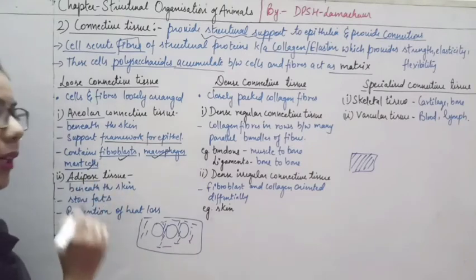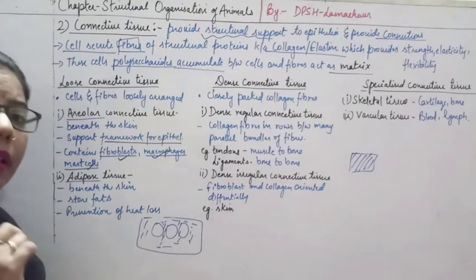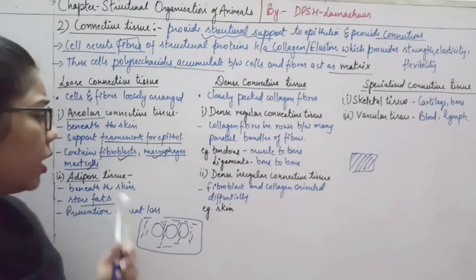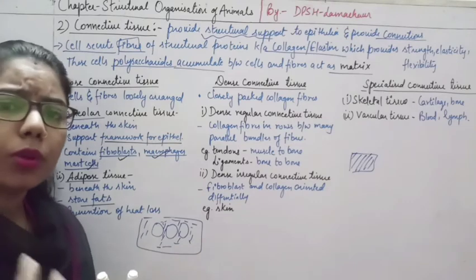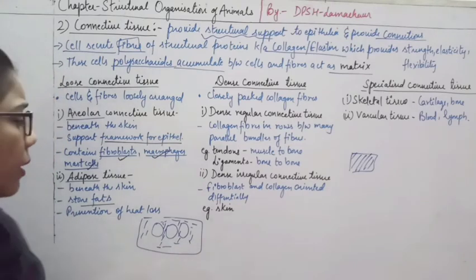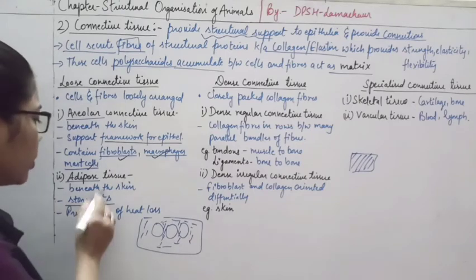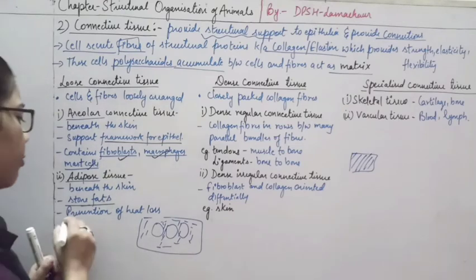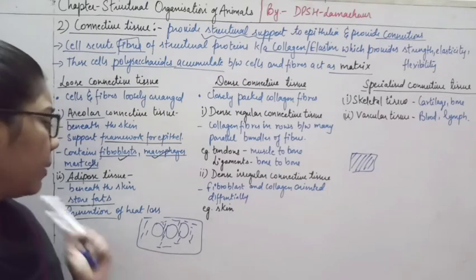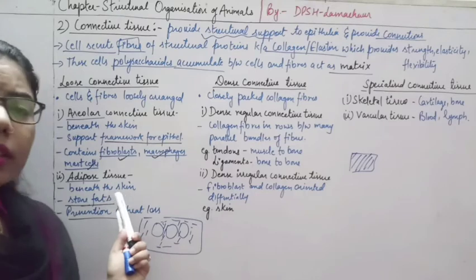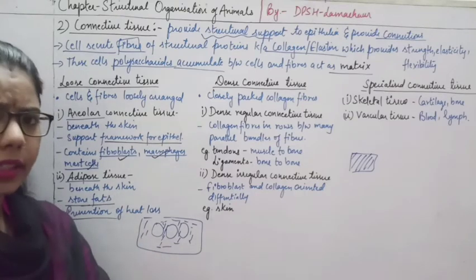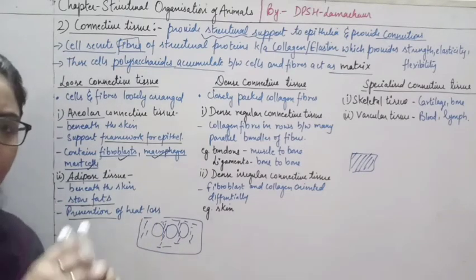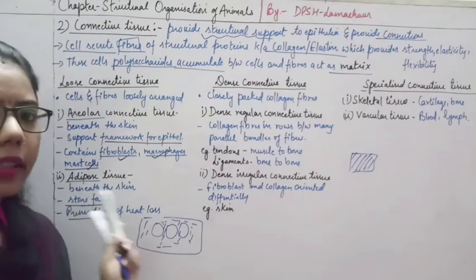Adipose tissue is also present beneath the skin and provides insulation. It stores fat from food intake, which prevents heat loss. Adipose tissue is not only found under the outer skin but also around organs like the heart and kidneys — wherever fat is present.